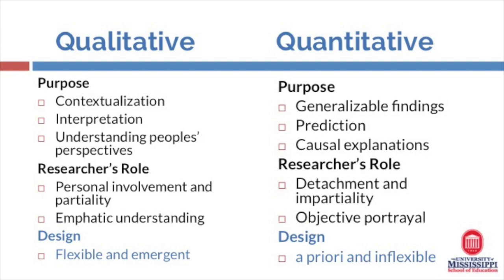In qualitative research, the researcher's role is one of empathic understanding, whereas in quantitative research, the researcher pursues a relationship with its subject that is detached and objective. Finally, the design of these research methods is quite different. Qualitative designs are flexible and emergent, meaning that through an iterative process they may change as the observation data begins to unfold, whereas in quantitative research the design is described as a priori and inflexible — once the hypothesis is locked in, it is followed through to its natural conclusion.